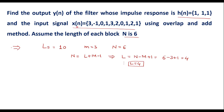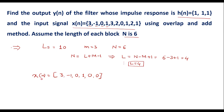In the overlap and add method, we divide the input sequence x[n] into blocks, each of length N equals 6. For the first block x1[n], we take the first L equals 4 samples of x[n], which are 3, -1, 0, 1. Then we add M minus 1 equals 2 zeros, making the length of x1[n] equal to 6.